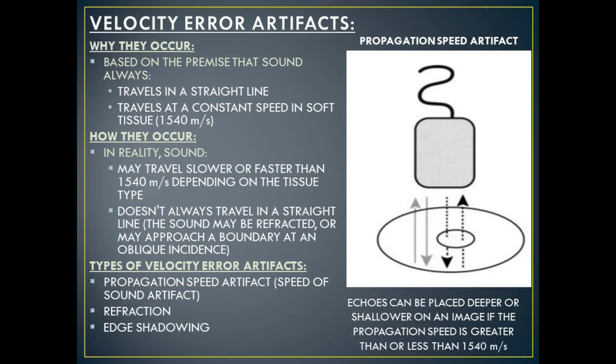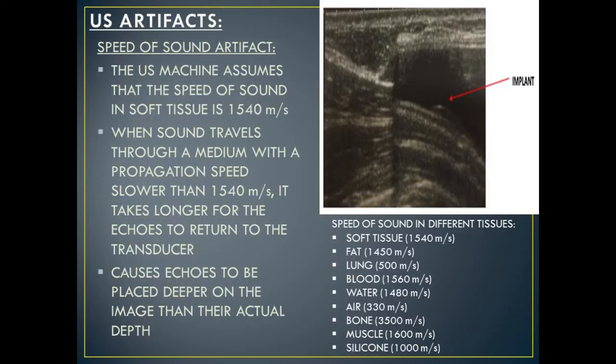Echoes can be placed deeper or shallower on an image if the propagation speed is greater or less than 1540 meters per second. Types of velocity error artifacts include propagation speed artifact, refraction, and edge shadowing. Speed of sound artifact, also known as propagation speed artifact, occurs when the ultrasound machine assumes that the speed of sound in soft tissue is always 1540 meters per second.